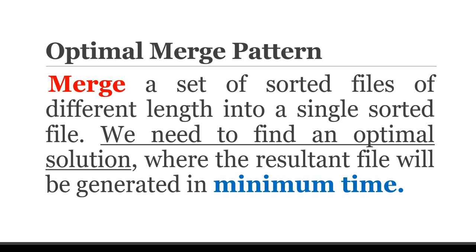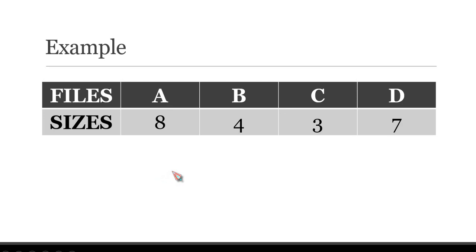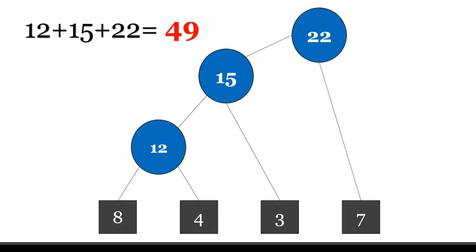As different pairing requires different amounts of time, in this strategy we want to determine an optimal way of merging many files together. At each step, two shortest sequence or values are being merged as the guiding method of optimal merge pattern. For example, we have a set of files a, b, c, and d with sizes of 8, 4, 3, and 7. If merge operations are performed according to the provided default sequence, we're going to use the merge pattern to resolve this problem.